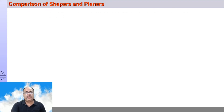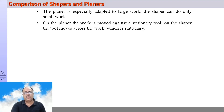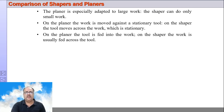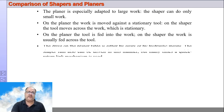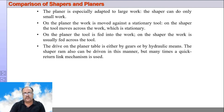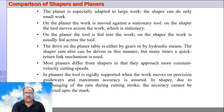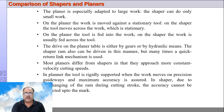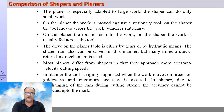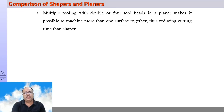Comparing the shaper and planer: the planer is specially adapted for large workpieces while the shaper can do only small work. On the planer, the workpiece moves against the stationary tool; on the shaper, the tool moves across the stationary workpiece. On the planer the tool is fed to the workpiece; on the shaper the workpiece is fed to the tool. The drive on the planer is either by gears or by hydraulic machines. Most planers differ from shapers in that they approach a more constant cutting velocity. In the planer, the tool is rigidly supported and the workpiece moves on precision guide ways, giving much more accuracy compared to the shaper where there is a cantilever overhang. Multiple tools can cut simultaneously on a planer, which is not possible on a shaper machine.